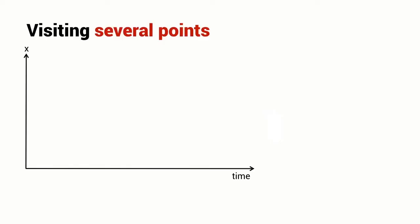Let's consider a more complex case. I want to start at this particular x value, finish at this particular x value, but in between I want to visit this x value and this x value. I refer to these intermediate points as via points. Sometimes they're also referred to as waypoints.